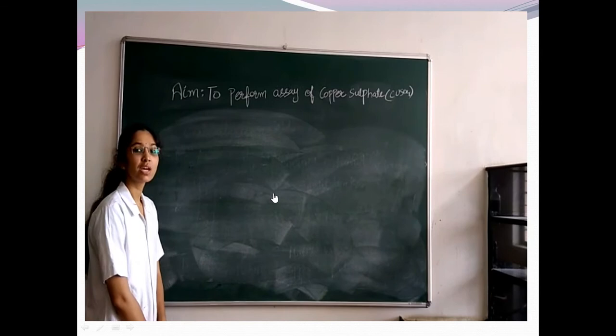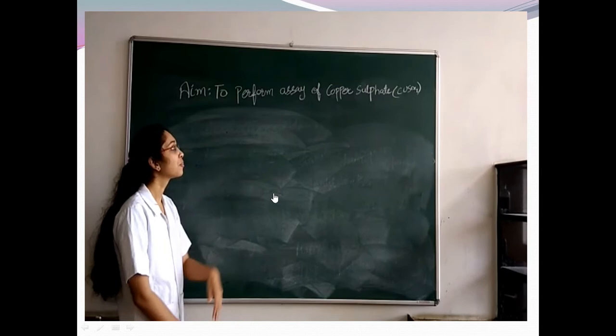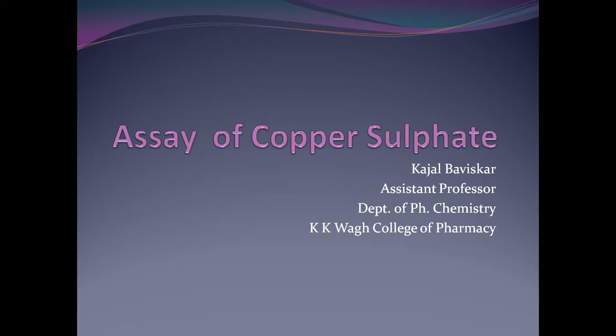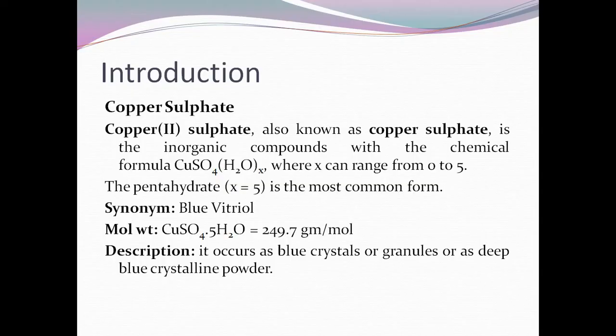Hello students. The practical which we are going to see is to perform assay of copper sulphate. The principle for this assay is iodometric titration, and the titrant which we are going to use is sodium thiosulphate, which acts as a reducing agent. Before moving on to the actual practical, let us see the introduction.